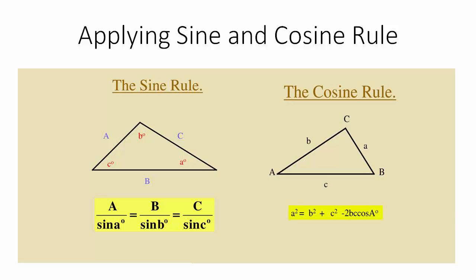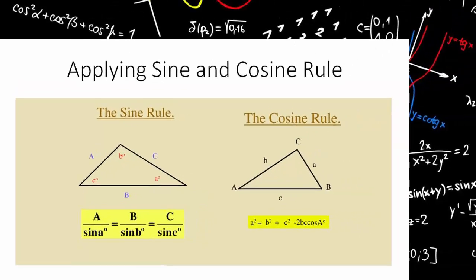The cosine rule simply reads in most formula books as a squared equals b squared plus c squared minus 2bc cos a, and if you look at that you may start to be getting an idea about when you'll use cosine rule and when you use sine rule.